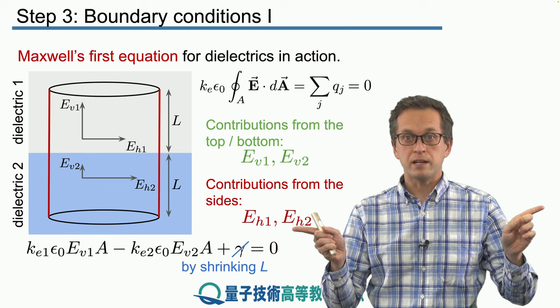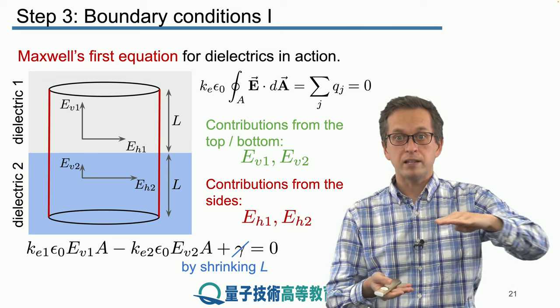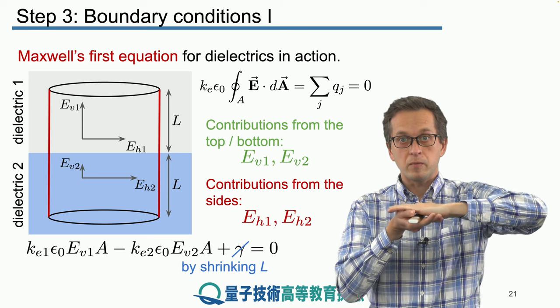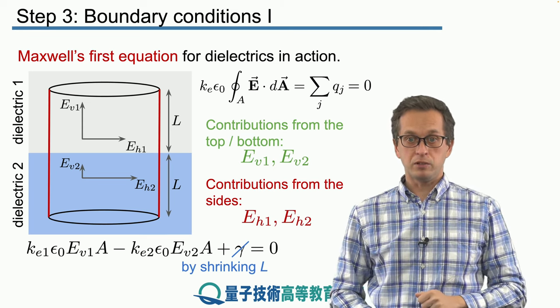All we are left with, the only surface, is a flat pancake, a flat circle sitting on the interface between dielectric 1 and dielectric 2.